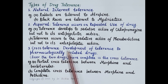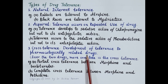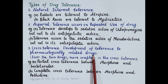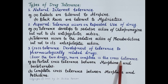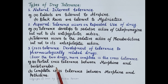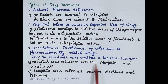Another type is cross tolerance, which is the development of tolerance to pharmacologically related drugs — that is, to multiple drugs belonging to the same class. The more pharmacologically related the two drugs are, the more complete the cross tolerance. For example, partial cross tolerance develops between morphine and barbiturates since both are CNS depressants, a broad category. Complete cross tolerance occurs between morphine and pethidine, as they are very closely related — both are opioid analgesics.